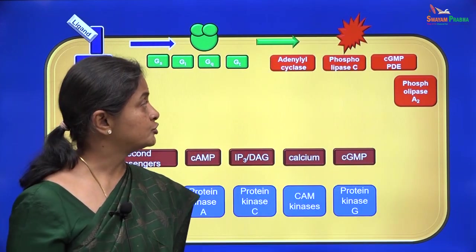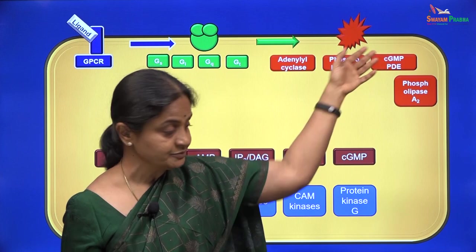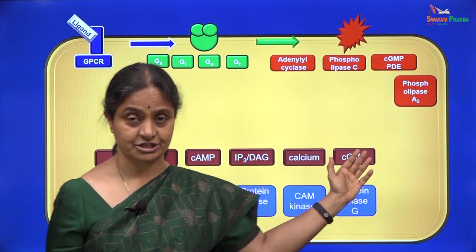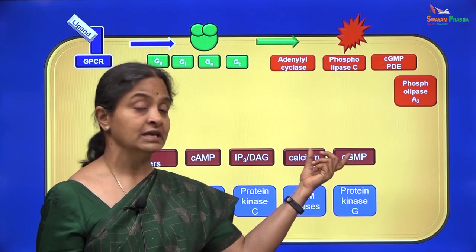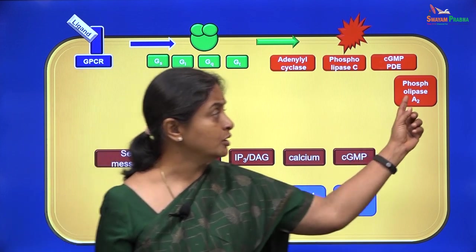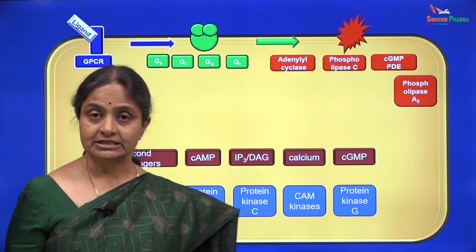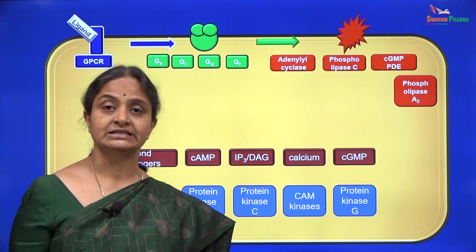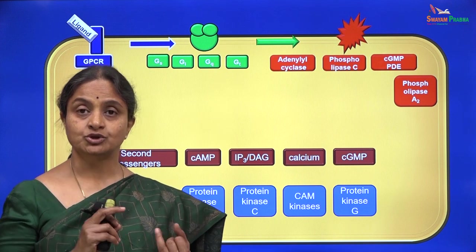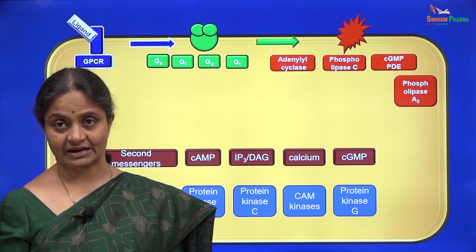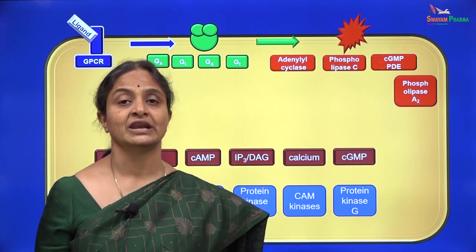We have so far seen ways in which G proteins act through these enzymes to elaborate second messengers which produce their effects by activating protein kinases or sometimes even directly. We will now move over to phospholipase A2. We have already considered phospholipase A2 in the first lecture on cell membrane lipids, where we looked at two phospholipases acting on cell membrane lipids: phospholipase C and the second membrane enzyme, phospholipase A2.